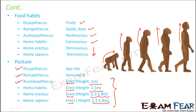Evolution is a continuous process and is happening even now. Even in human beings today there are small changes taking place that are not easily noticed. Over another thousand years or so, further changes would have already taken place.